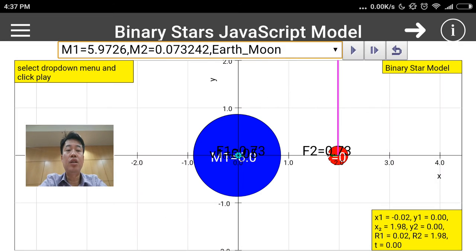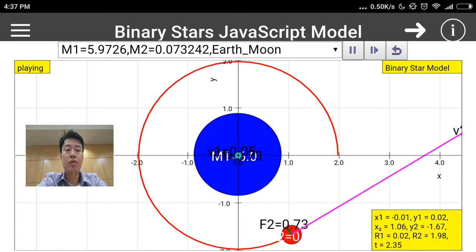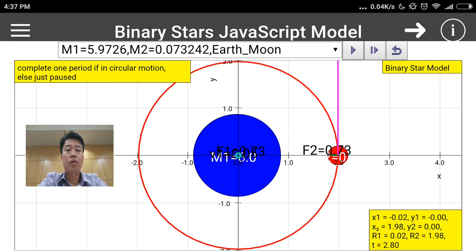One interesting thing about using this simulation: M1 equals 5.9726, M2 equals 0.073242 Earth-Moon. The question is, does the moon describe a perfect circular motion around the earth? Is Earth at the center of the rotation of the moon?